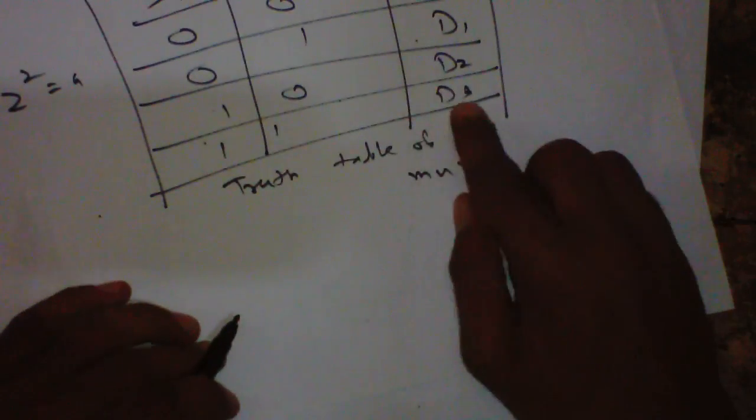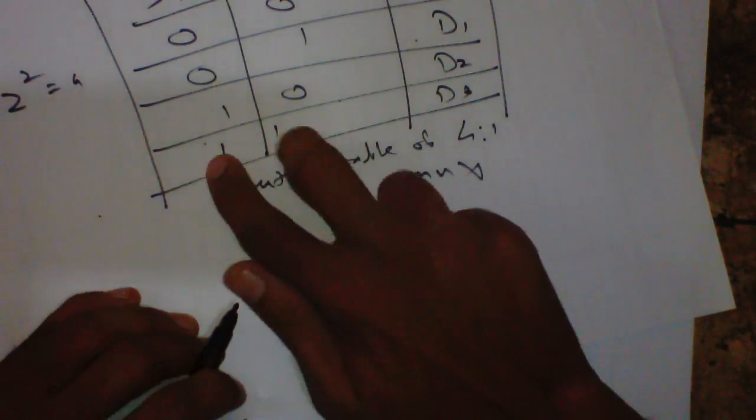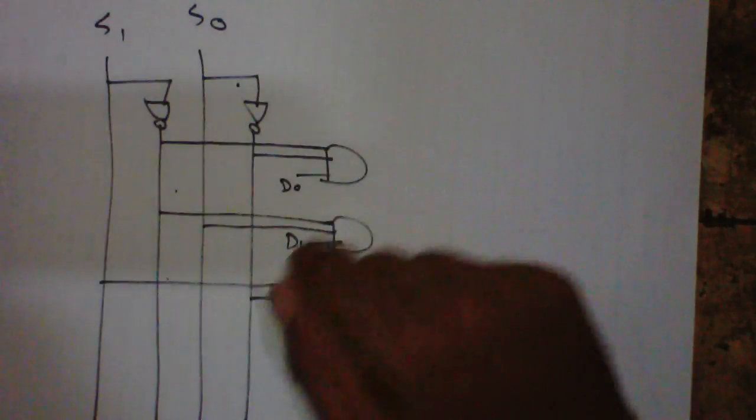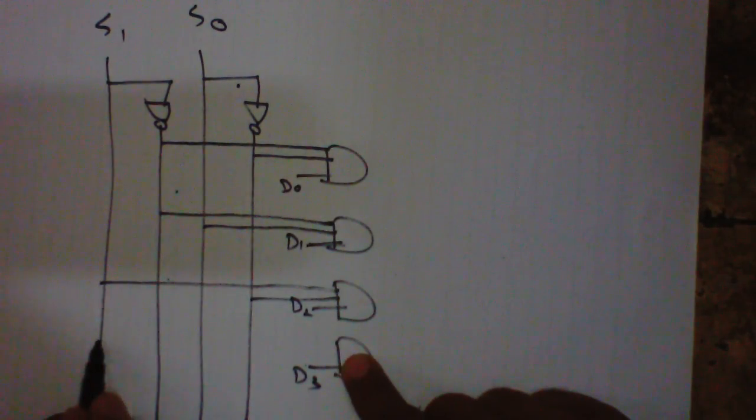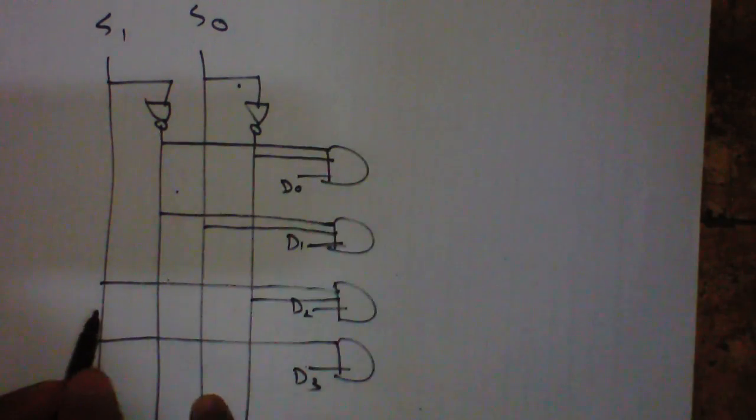And for D3, both directly: S1 and S0. Means directly this line and directly S0.